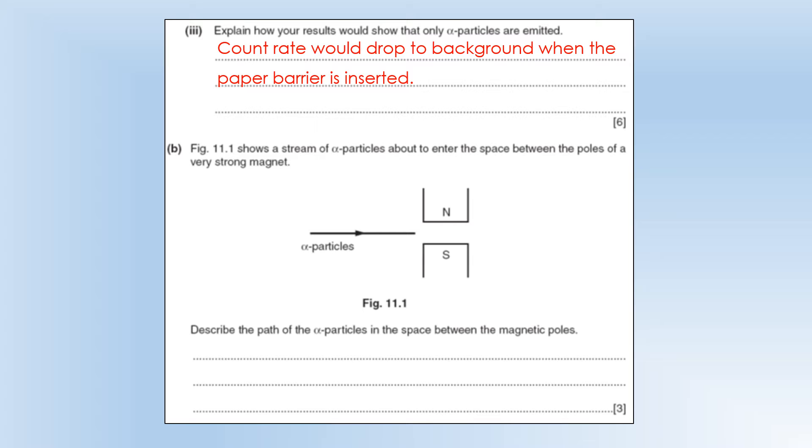So the diagram shows a steady stream of alpha particles about to enter the space between the poles of a very strong magnet. Describe the path of the alpha particles in the space. So we've got the charged positive particles going from left to right, so your middle finger points that way. The field goes from north to south,